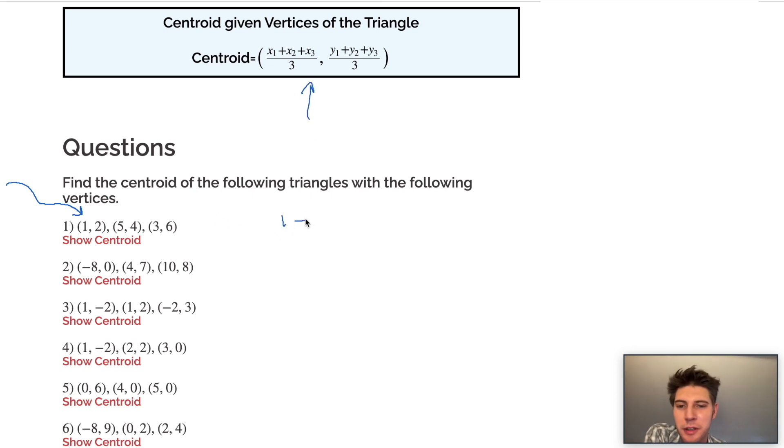We go one plus five plus three. I added the x values, divided by three, comma, two plus four plus six, and I divide it by three. One plus five is six, plus three is nine. So this is nine over three. Two plus four is six, plus six is twelve. Twelve over three.